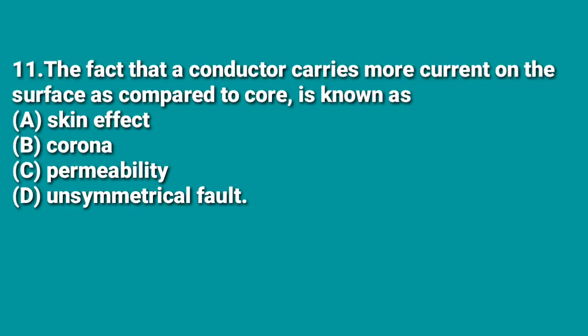The next question: the fact that a conductor carries more current on the surface as compared to the core is known as — A: skin effect, B: corona effect, C: permeability, D: unsymmetrical fault. The answer is A, skin effect. Corona effect occurs in transmission lines and is a different phenomenon.